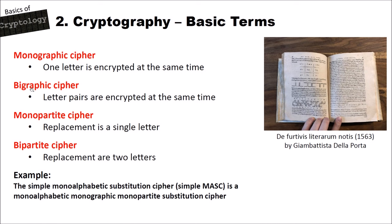Then we have biographic ciphers, where letter pairs are encrypted at the same time — you encrypt the first two letters, then the second two letters, and so on. An example for this is the Playfair cipher, which we also had a video about. Then we have monopartite ciphers, where the replacement of a letter is a single letter. The Caesar cipher is also an example — we replace a single letter with another single letter. Then we have the bipartite cipher, where we replace a letter with two letters. An example for this is the ADFGVX, where in the first step a letter such as A is encrypted with DD, or B with AX, and so on.